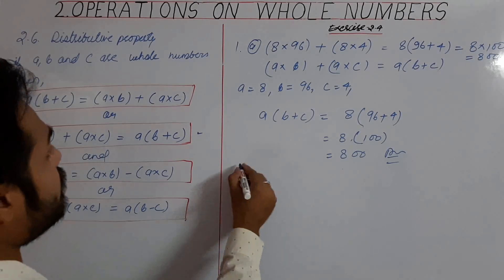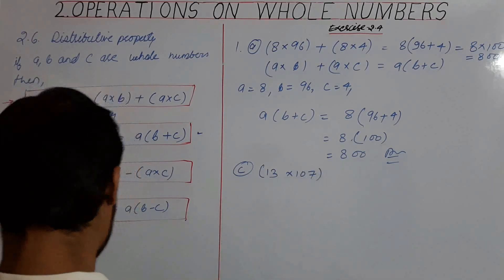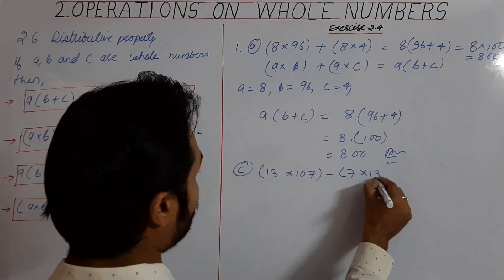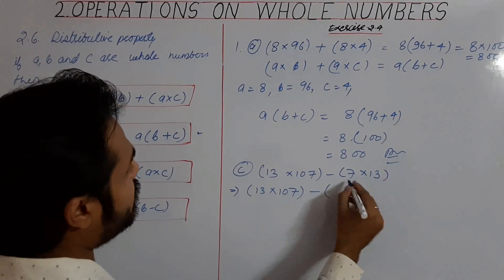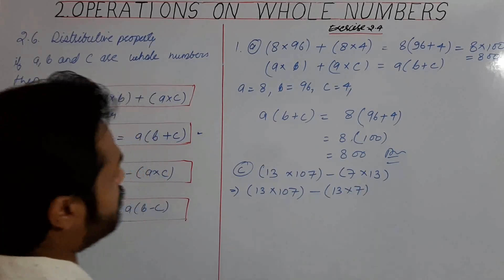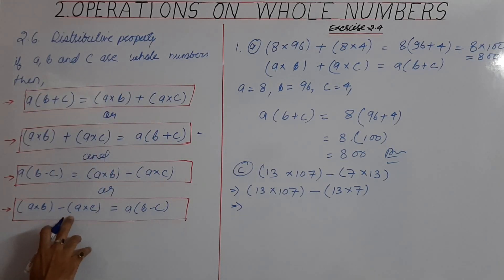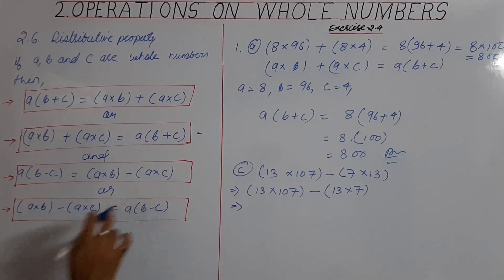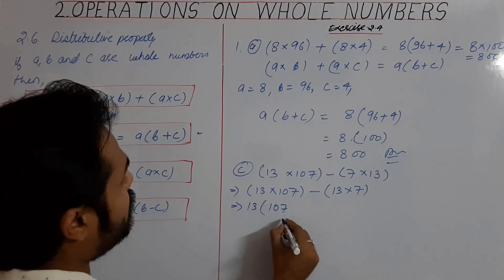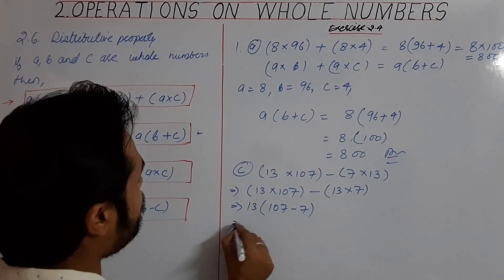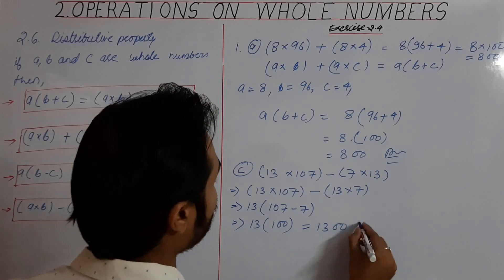Next, we're going to solve part C: 13 into 107 minus 7 into 30. This statement is similar to the distributive form. We take 13 common in bracket 107 minus 7. So 107 minus 7 is 100, and the answer is 1300.